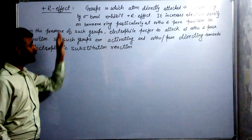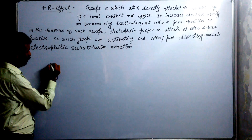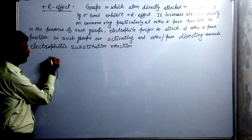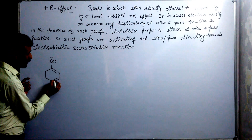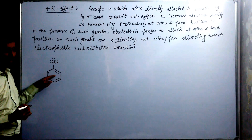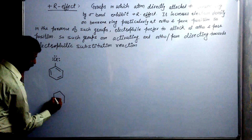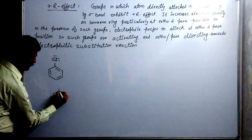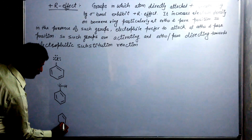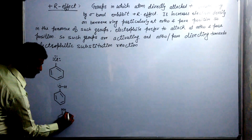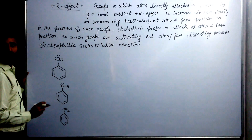Plus R effect is shown by the groups which have a lone pair. For example, chlorobenzene, which has a lone pair on the atom directly attached to the benzene ring. Resonance means that the lone pair and pi bond are in conjugation. So when we have chlorobenzene, phenol, or aniline, all of them have an atom attached to the ring with a lone pair. So they all show the plus R effect.